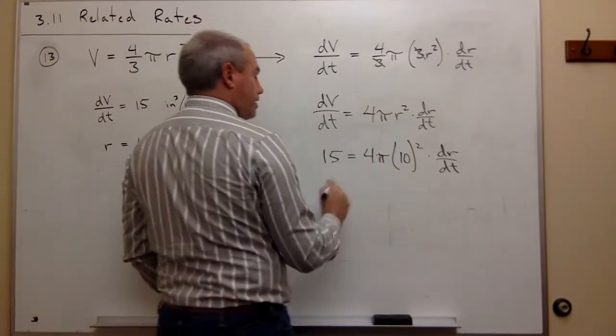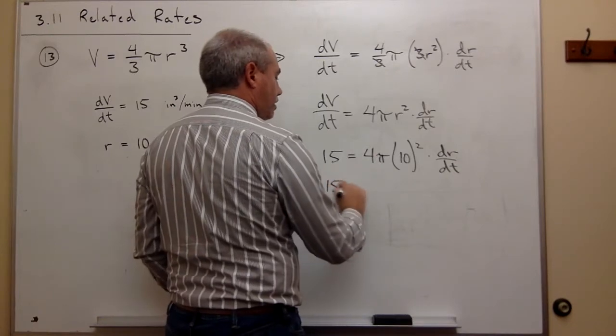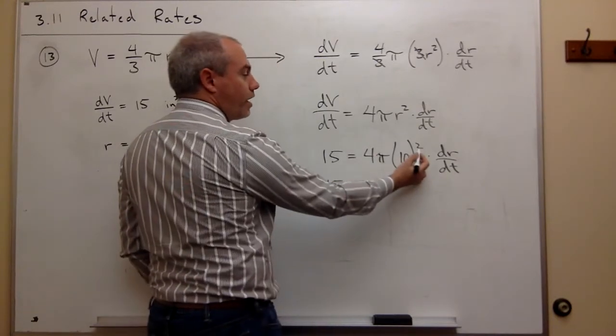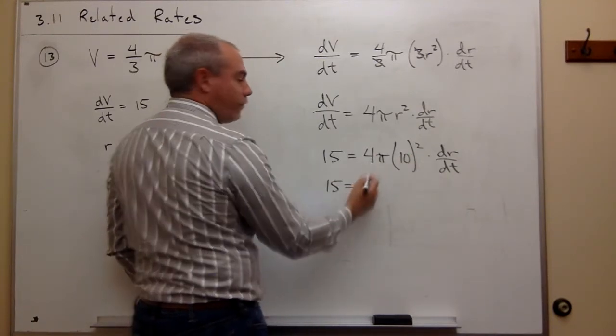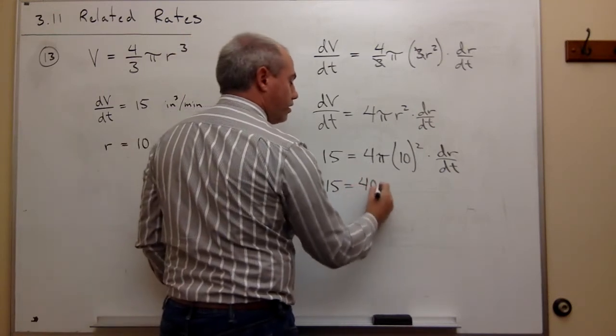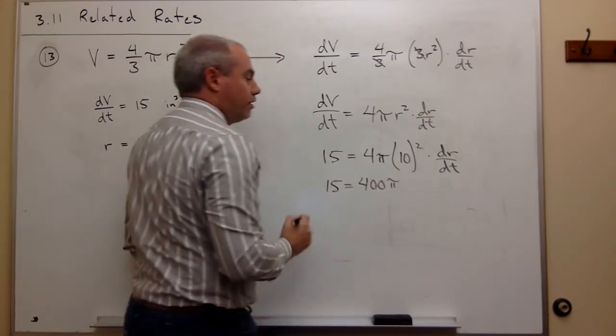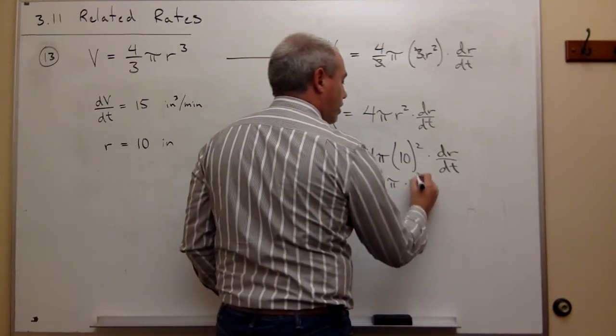So if I multiply this out, I get 15 = 10² is 100 times 4 is 400π times dr/dt.